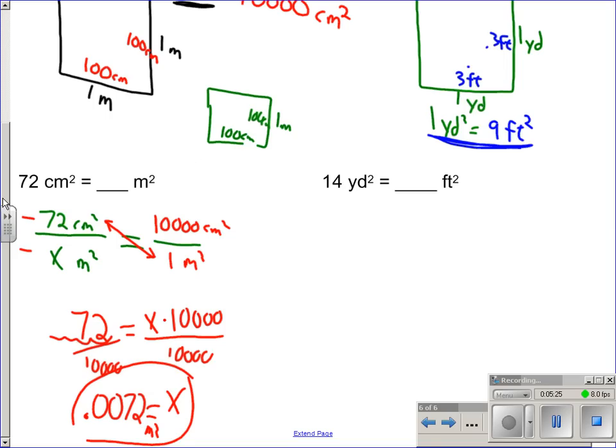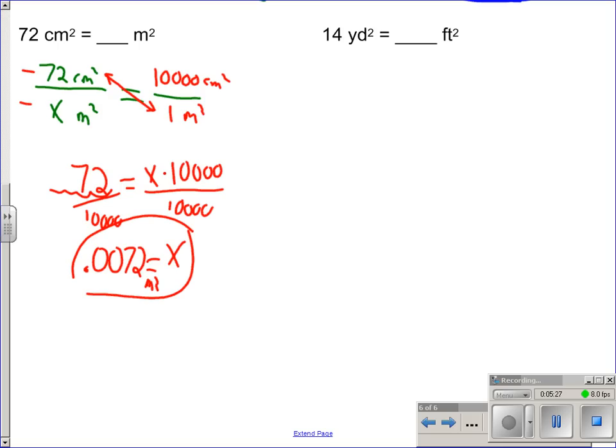For this next example, 14 square yards. We want to know how many square feet that is. Again, I don't expect you to know the conversions, but I expect you to be able to think your way through this. If we have one yard by one yard square, that is one square yard. One yard has three feet, so what we have is nine square feet.